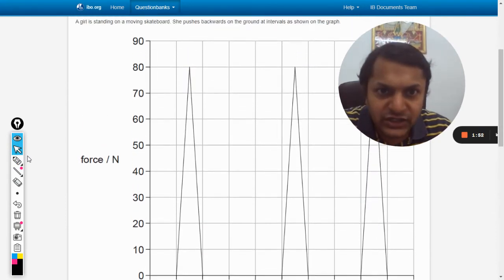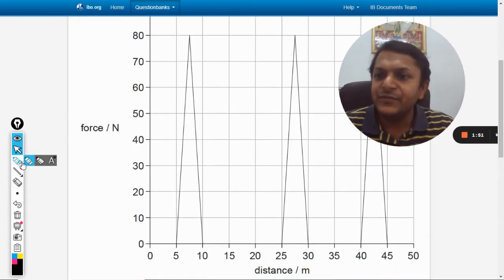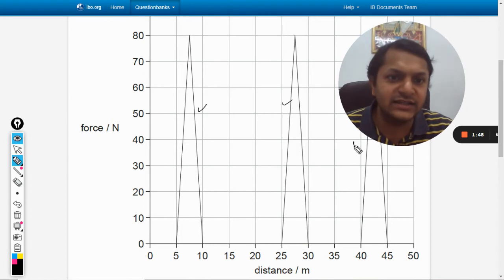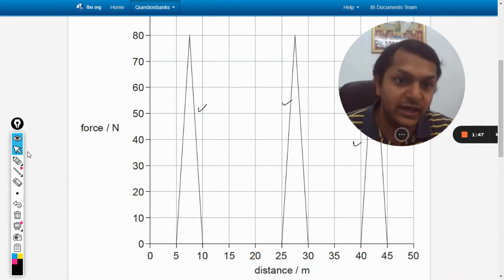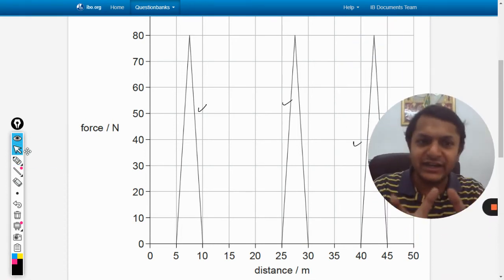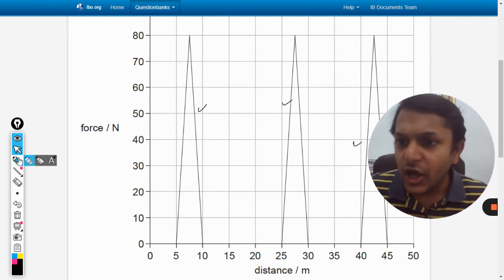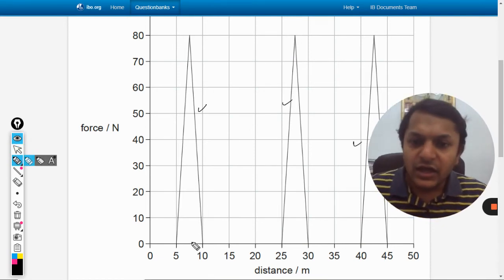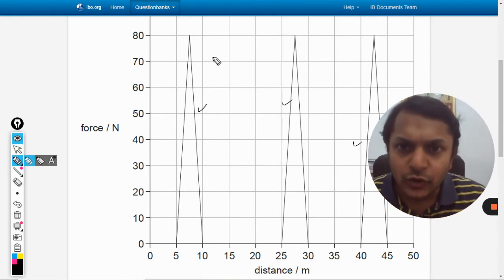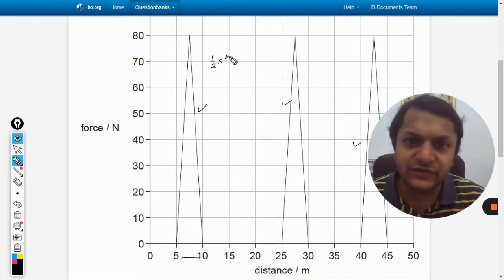There are three triangles: this is the first one, second one, and this is the third one behind my image. They are very similar triangles. How to find the area? Half into base into height. Half into base—base is 10 minus 5, that is 5.